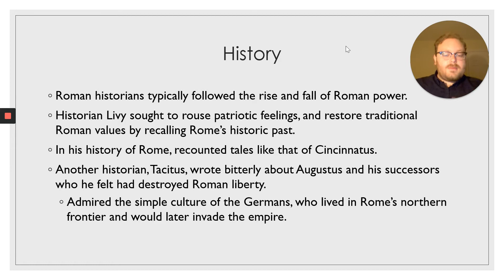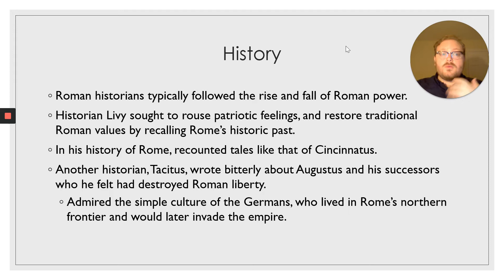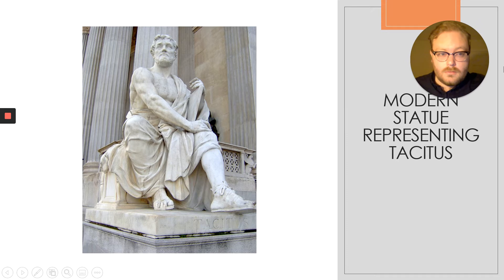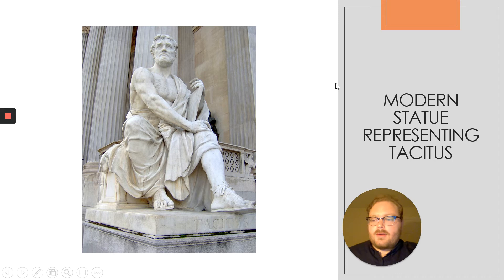Another historian, Tacitus, wrote bitterly about Augustus and his successors. This is important because it shows that not everybody was on board with the transition from the Republic to becoming an empire. Tacitus admired the simple culture of the Germans, who would end up invading the empire later, and he felt that Augustus and his successors had destroyed Roman liberty. This is a modern statue representing Tacitus.